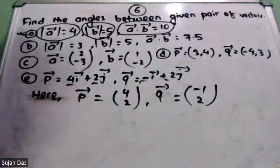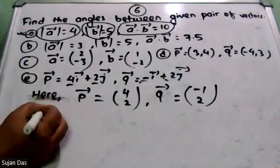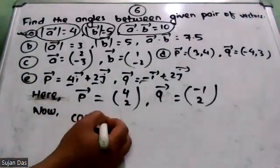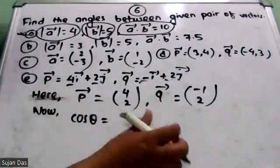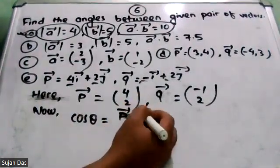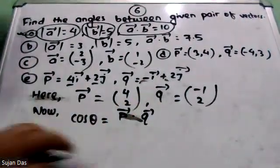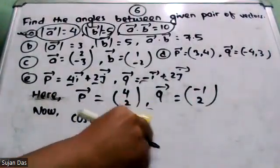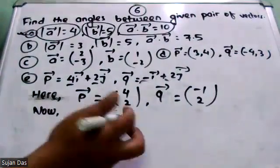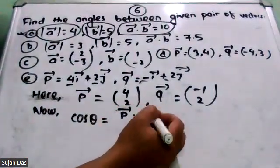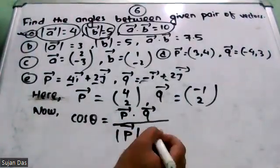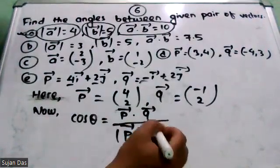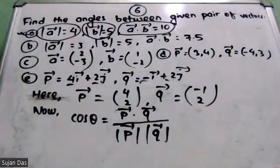Now, what about the angle? So, what is the angle formula? Cos theta — the angle formula. Vector A, p like q. So we use vector p dot vector q. Divided by p ko vector ko magnitude into q ko vector ko magnitude. So this is the formula, right?